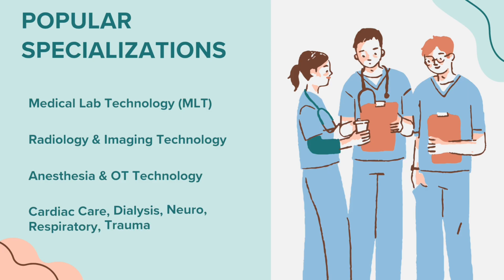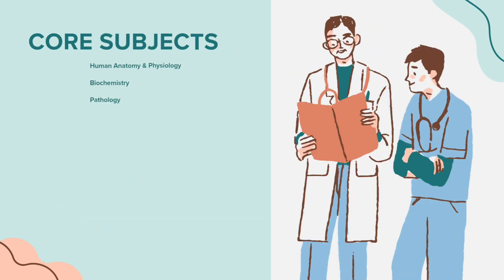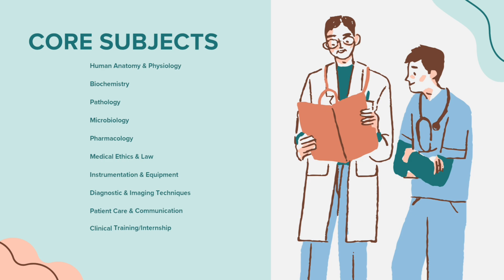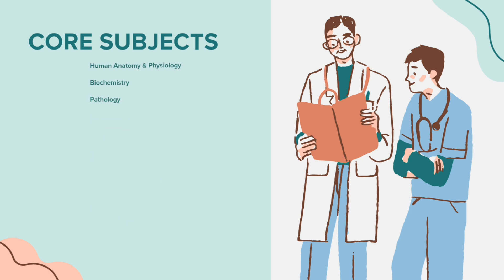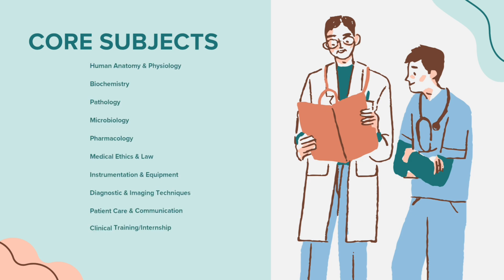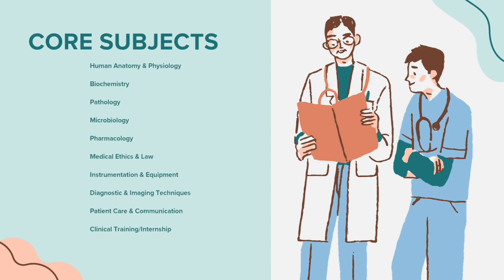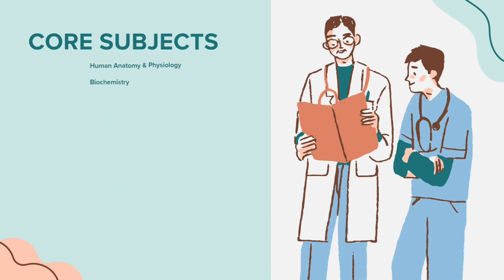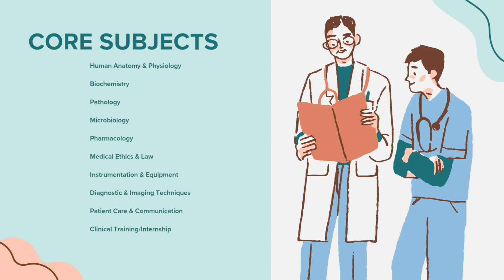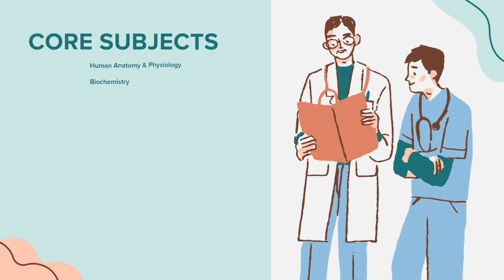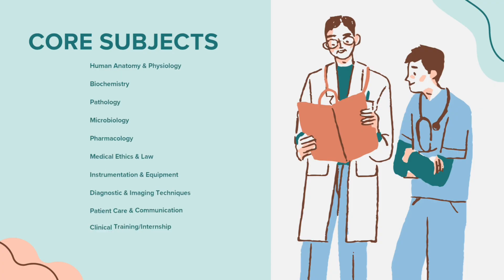These are the courses under BSc Allied Sciences. The core subjects you will study include Human Anatomy and Physiology, Biochemistry, Pathology, Microbiology, Pharmacology, Medical Ethics and Law, Instrumentation and Equipment, Diagnostic and Imaging Techniques, Patient Care and Communication, and Clinical Training and Internship.